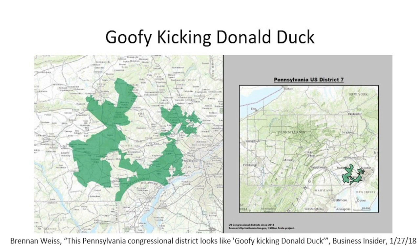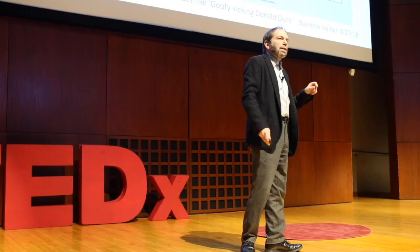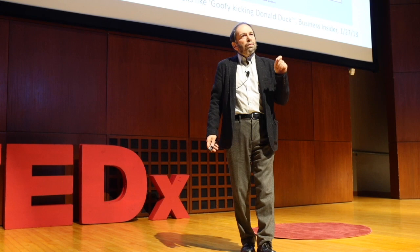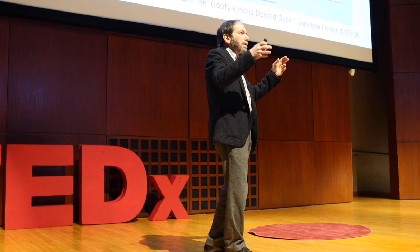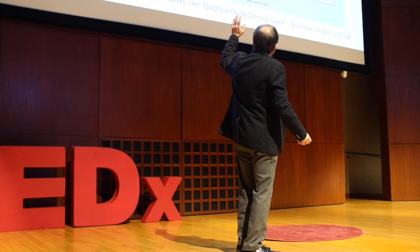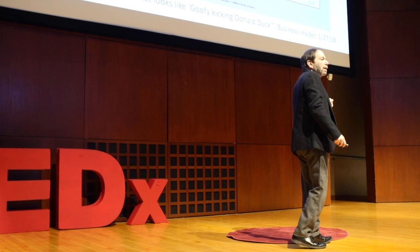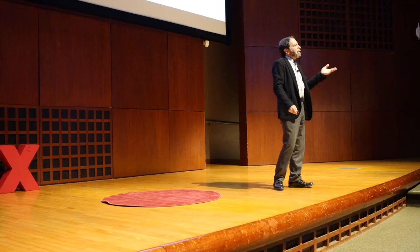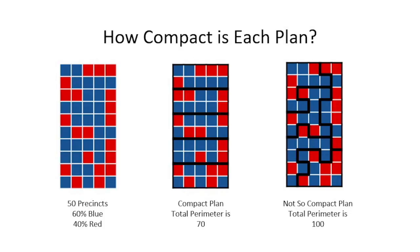Another metric for how to think about whether a given state map is fair has to do with the compactness of each district. The term gerrymandering refers to these long, filigree districts that imagine all kinds of crazy shapes. You can see a particularly extreme example in this Pennsylvania map from the 2010 census. One way to measure compactness is to simply sum up the perimeter of each of the districts.